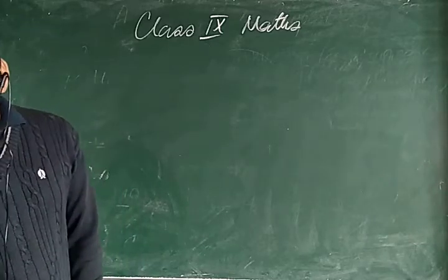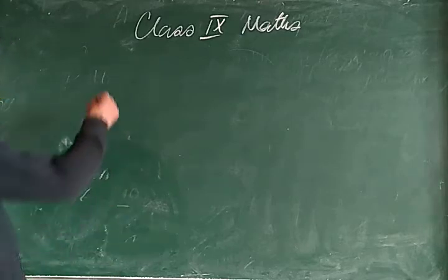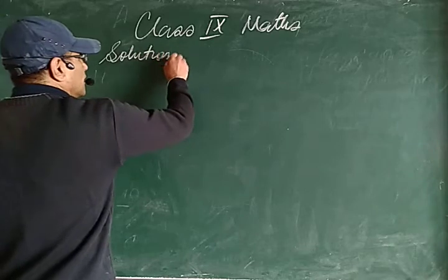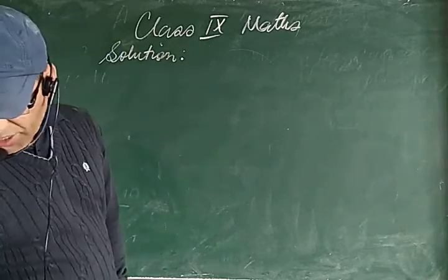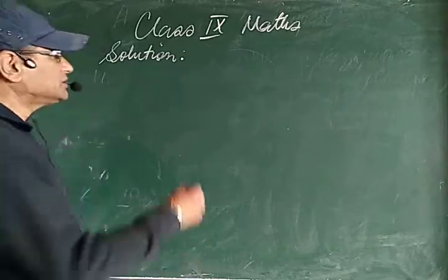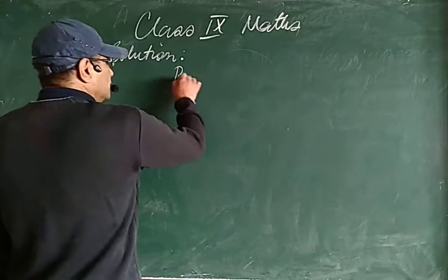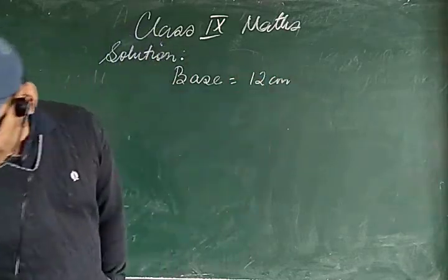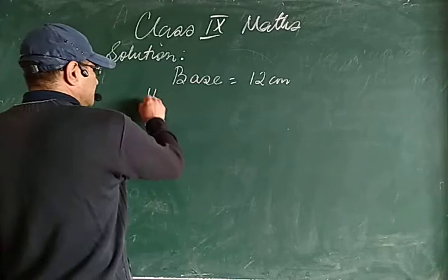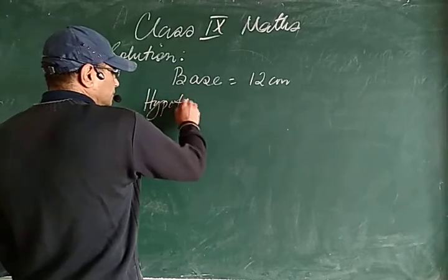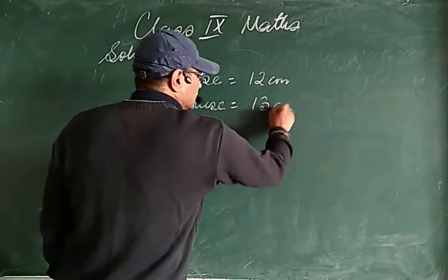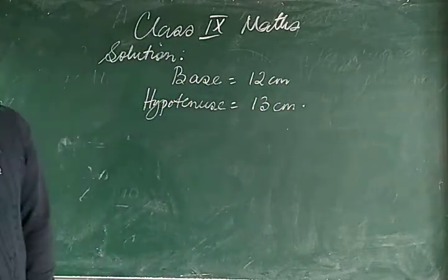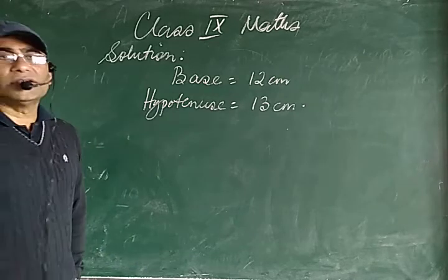The question says: the base of a right angle triangle is 12 centimeters and its hypotenuse is 13 centimeters long. So given: base is equal to 12 centimeters, hypotenuse is equal to 13 centimeters. We need to find its area and perimeter.